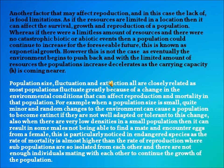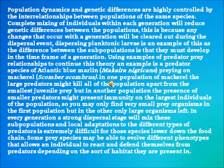When there are very low densities in small populations, some males may not be able to find a mate or encounter eggs from a female. This is particularly noticed in endangered species where the rate of mortality is almost higher than the rate of reproduction, and subpopulations are so isolated from each other that there are not enough individuals mating to continue population growth. Population dynamics and genetic differences are highly controlled by the interrelationships between populations of the same species. Complete mixing of individuals within each generation will reduce genetic differences between populations, as any changes that occur within a generation will be cleared out during the dispersal event. Dispersing planktonic larvae is an example of this, as differences between subpopulations must develop within the time frame of a generation.